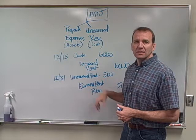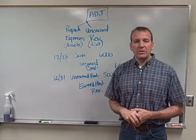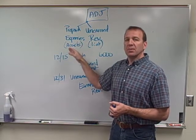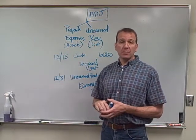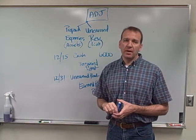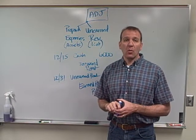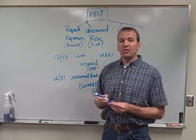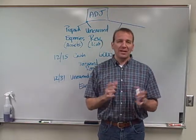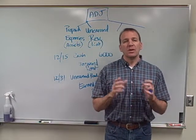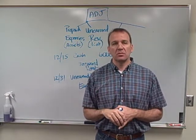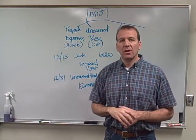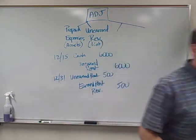I hope unearned revenues are a little easier than prepaids. Prepaids aren't hard — the hardest part is the accumulated depreciation section — but unearned are very straightforward. Now we're going to go on to the last two types of adjustments. There won't be time to cover them in this video, since each video is about ten minutes, so I'll do another video for those last two adjustments, which are the easiest ones. Good luck with this next part.